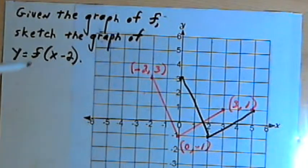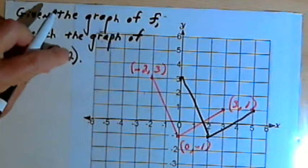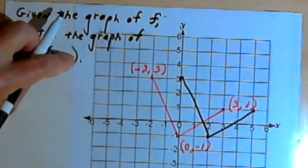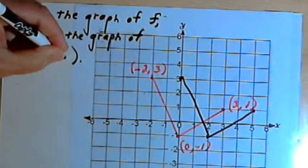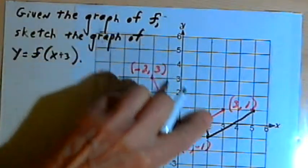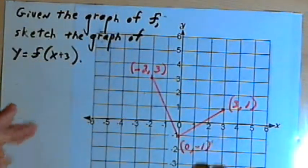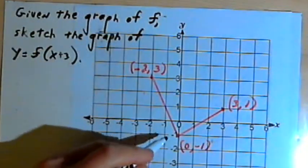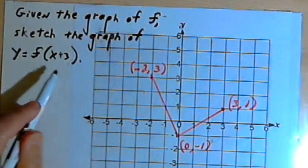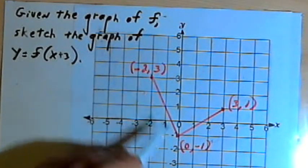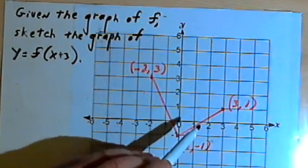Now, if instead of having x-2, if I had some positive number, like, let's say, x plus 3, then that would take the graph and shift it three units to the left. In other words, it would be the result of subtracting 3 from each of the x-coordinates.